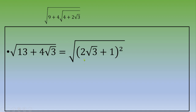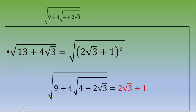You check that 2 square root of 3 plus 1 is a positive quantity. Therefore, square root of 9 plus 4 times square root of 4 plus 2 square root of 3 equals 2 square root of 3 plus 1. Thanks for watching this video — don't hesitate to leave a comment, and I'll see you in the next video.